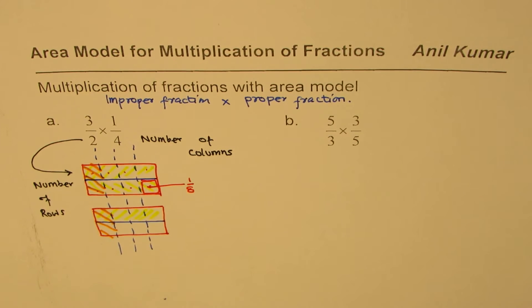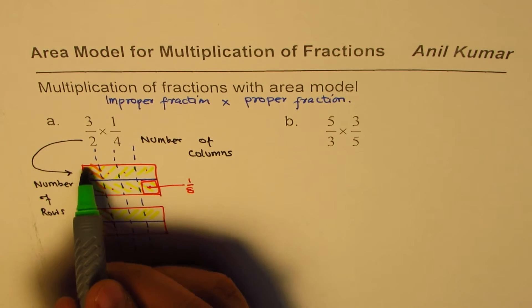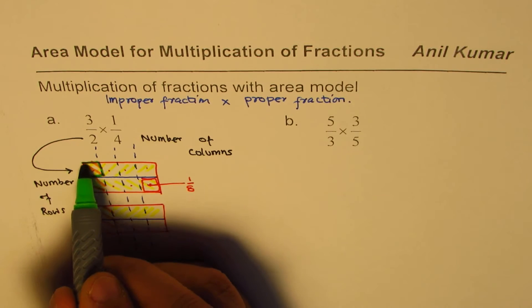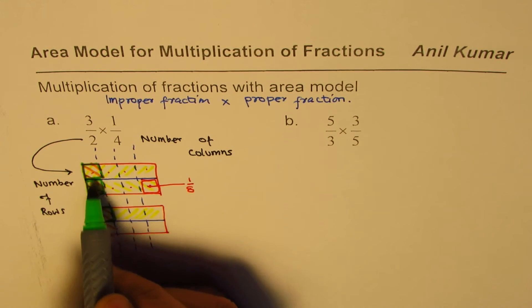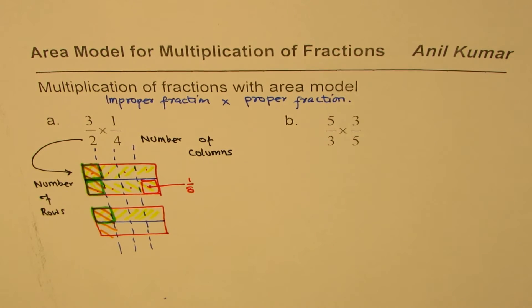Now when you multiply, you have to take what is common between the two. So what is common between the two? So this area is common. This area is also common. This area is also common.